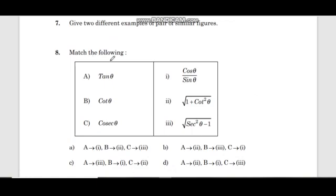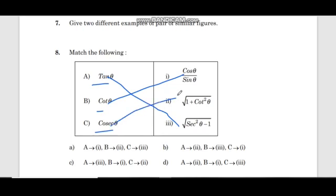Match the following: tan theta, cot theta, cosec theta. Cot theta is cos theta by sin theta. Tan is related to secant square theta. The answers are: A matches with 3, B with 1, C with 2.